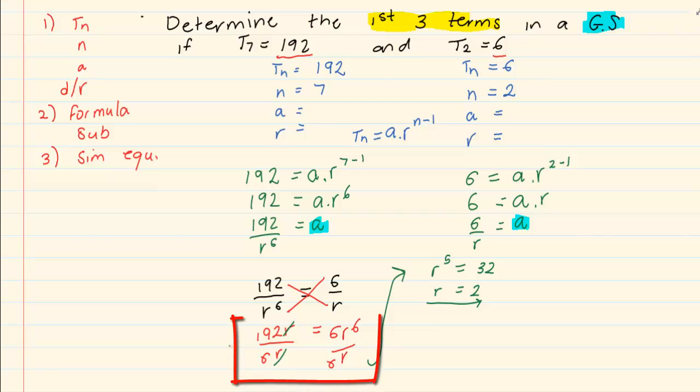Now, from this level, once you have cross multiplied, that is your basic grade 10 work. If you are not okay with this, it means you are not familiar with your grade 10 work and you have to go and understand how to solve for x completely in grade 10 and grade 11. Now, once we have solved for R, we need to go back and get A.